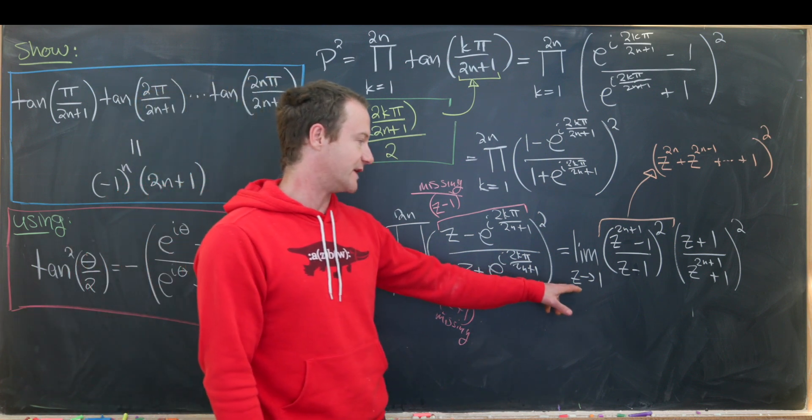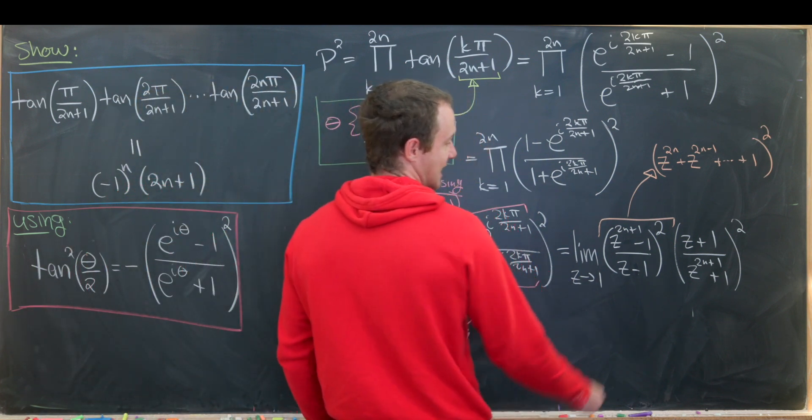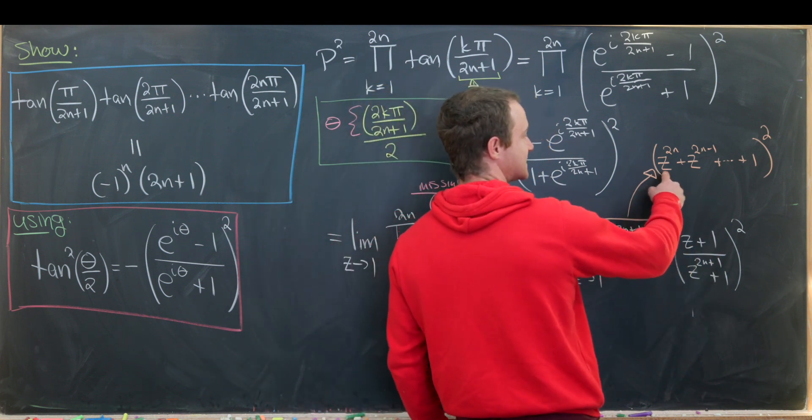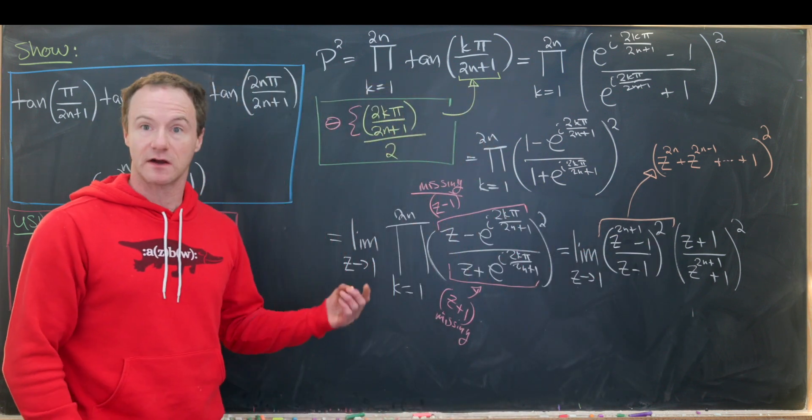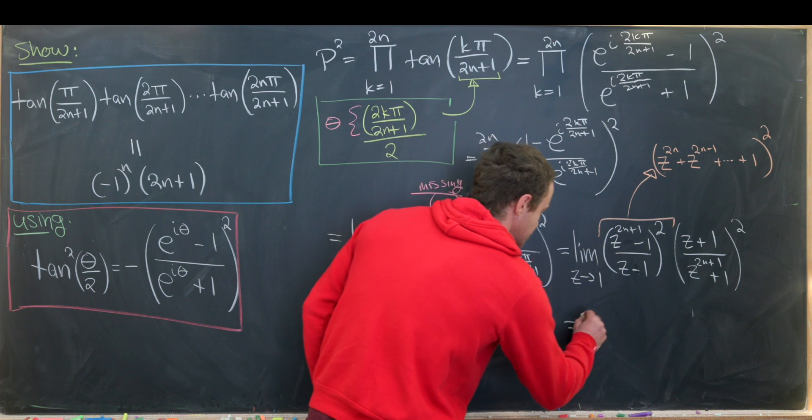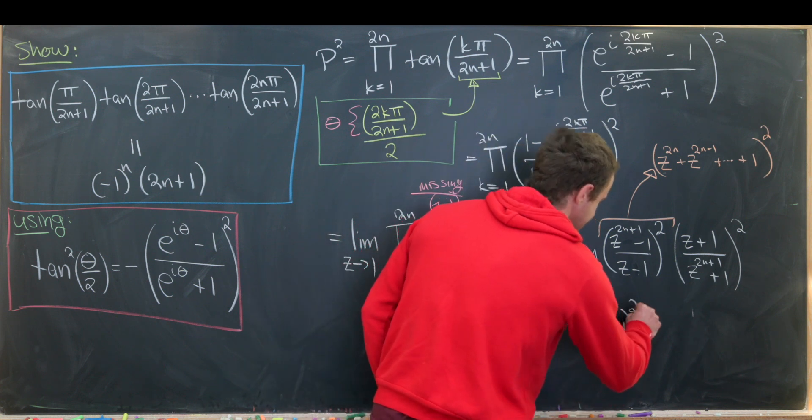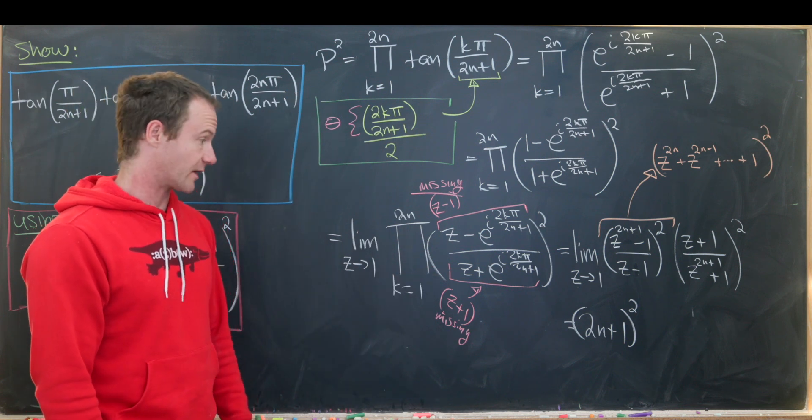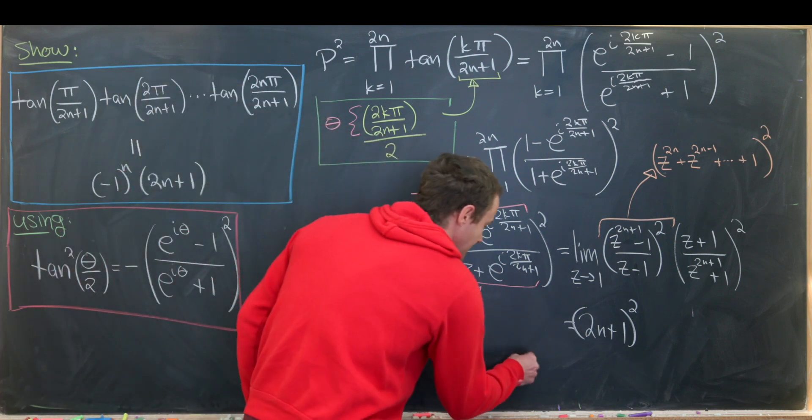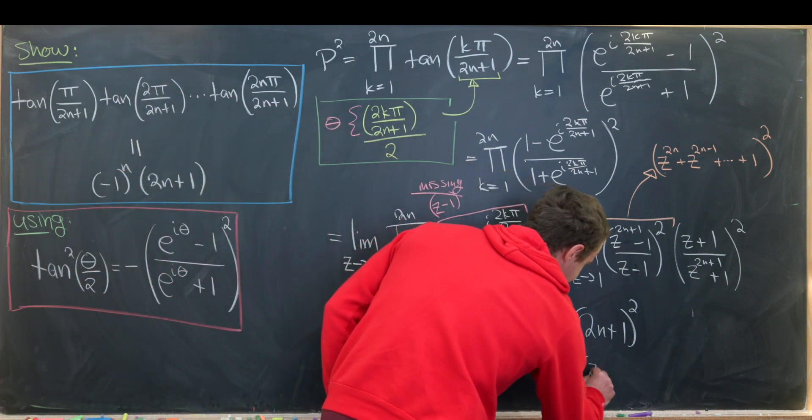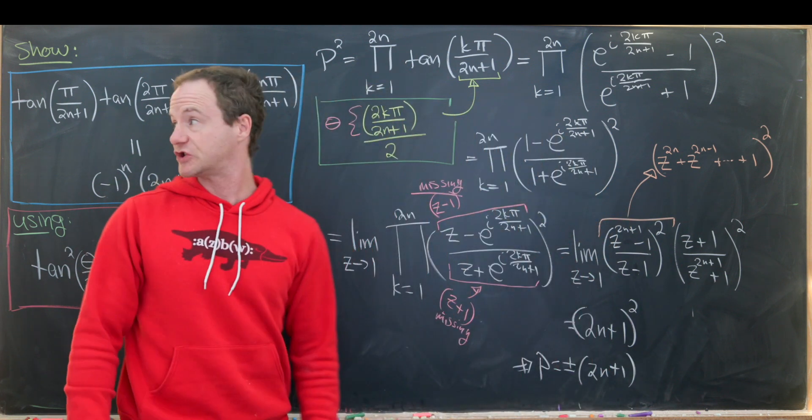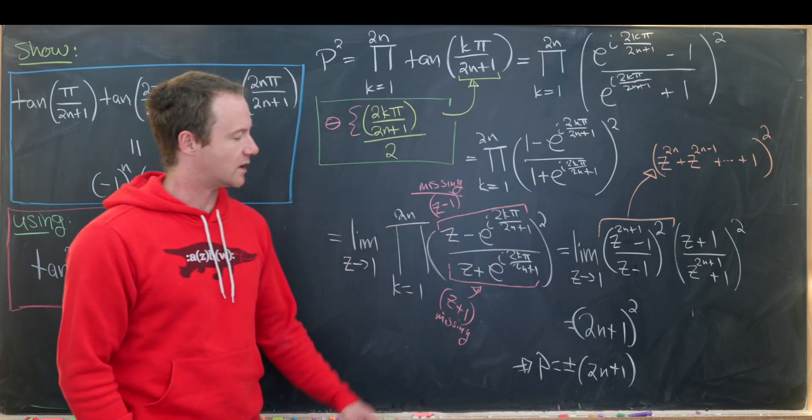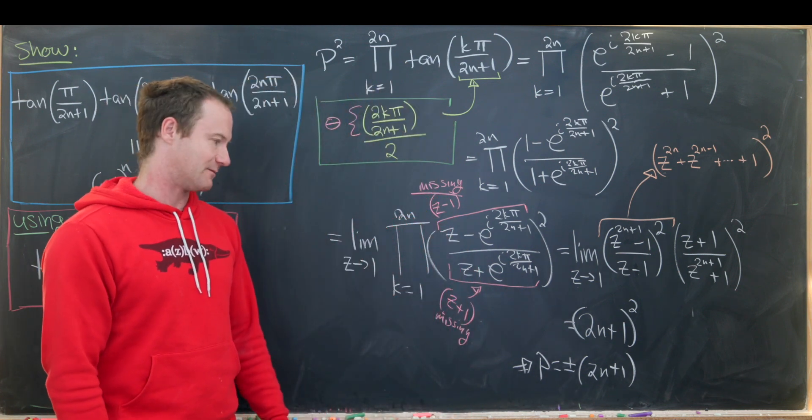Okay but after that we can evaluate z at 1. Notice that this part tends to the number 1 so that's good. And then here we've got the sum of 2n plus 1 terms that are all equal to 1. So that gives us 2n plus 1 quantity squared. So that means we've shown our product is 2n plus 1 squared. But that means that p is equal to plus minus 2n plus 1. Which means we're almost to our goal as showing that it's minus 1 to the n times 2n plus 1. So we'll decide when we get a plus sign and a minus sign on the next board.